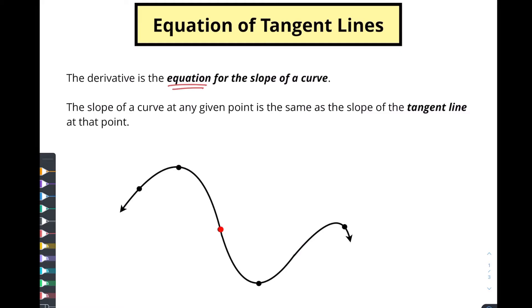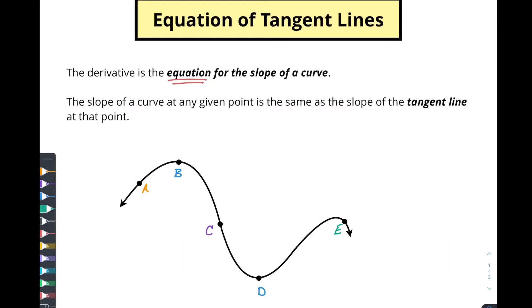We talked about this in some of our previous videos so if you need to go back and check those out they're linked in the description below. We've got all these different points on this curve and we're going to look and see what happens when we find the tangent line at some of these points. Let's label each of these: point A, point B, point C, point D, and finally point E.